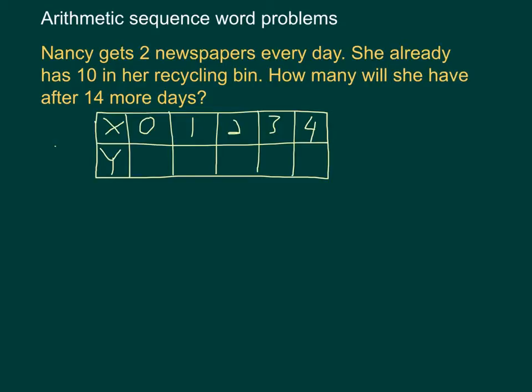On the first day, we know that she has 10 newspapers. On the second day, she'll have 12 because she got two more. On the third day, she'll have 14, and on the fourth day, she'll have 16.